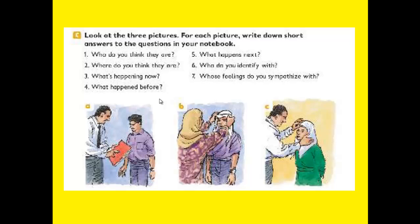For question two — where are they? In the first picture, the two people are at work. In picture B they are at home, and in picture C they are also at home. What is happening now? In picture A, the boss is discussing something with the employee. In picture B, the mother is adjusting the hat or cloth on her son's head to make it fit.